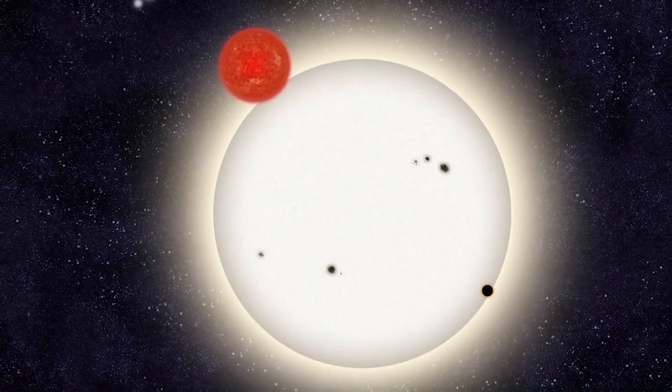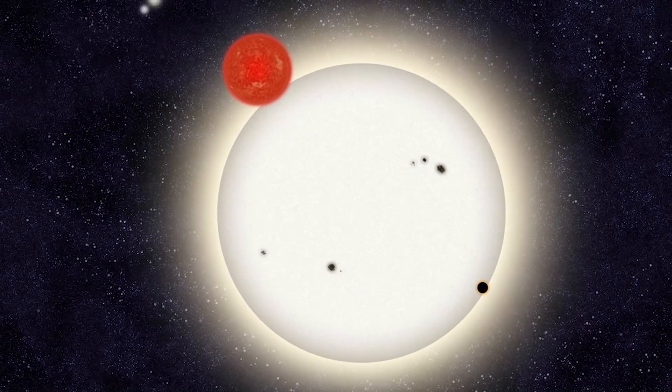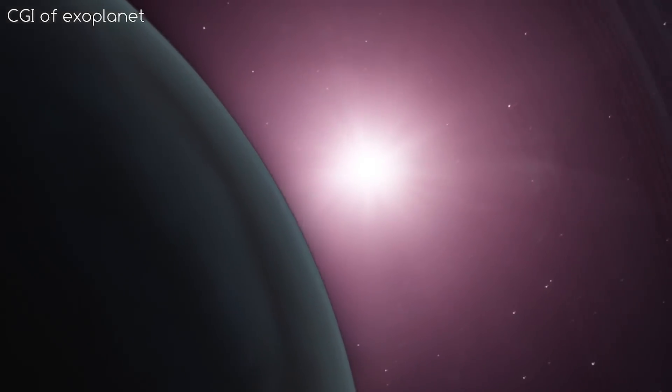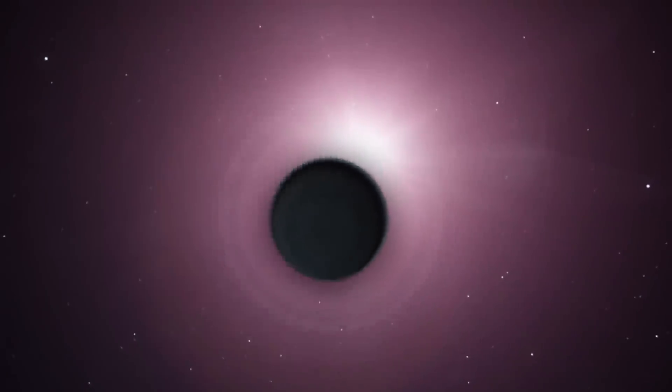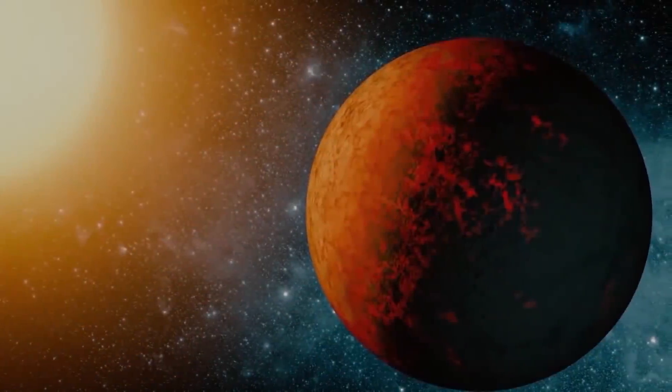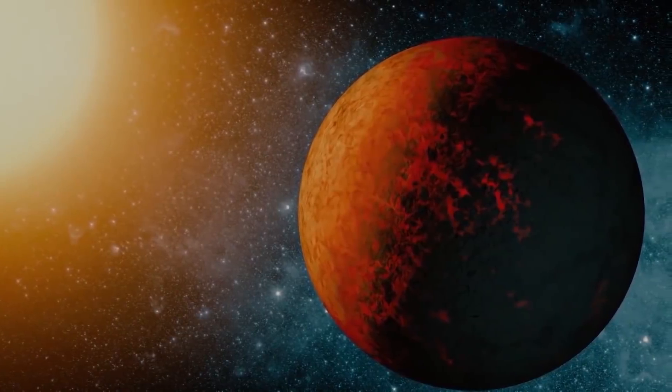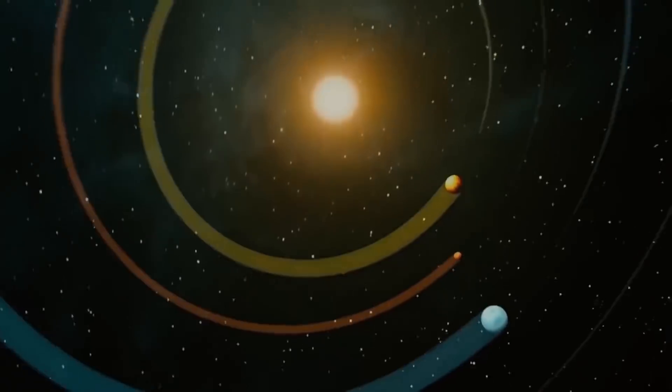The Planet with Four Suns: PH-1 is an exoplanet that presents quite strange conditions. The reason for this is that it has four stars around it. It revolves around two of them, and in turn, the other two orbit around it. This rare condition is known as a circumbinary system.